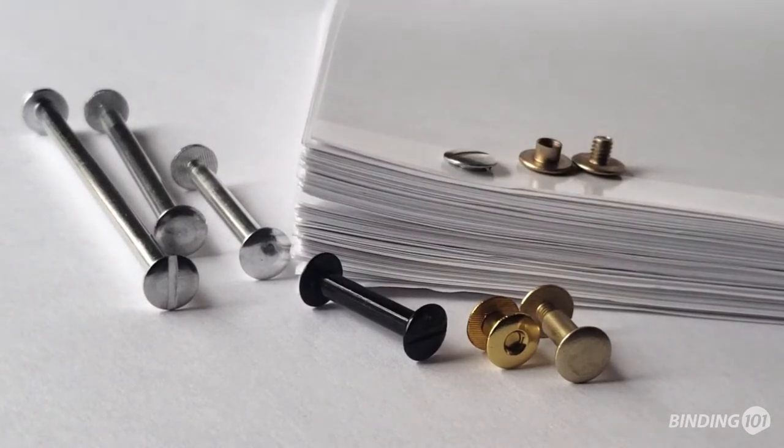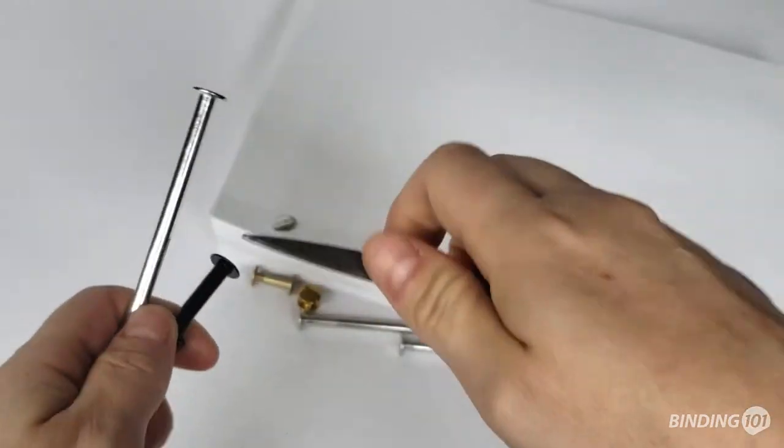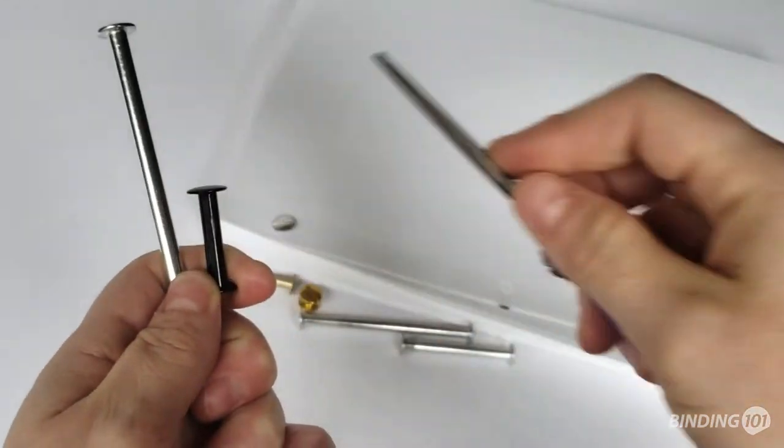Aluminum screw posts are the most popular kind of binding post. Also called Chicago screws, they are made of a sturdy and durable aluminum that is strong but affordable.